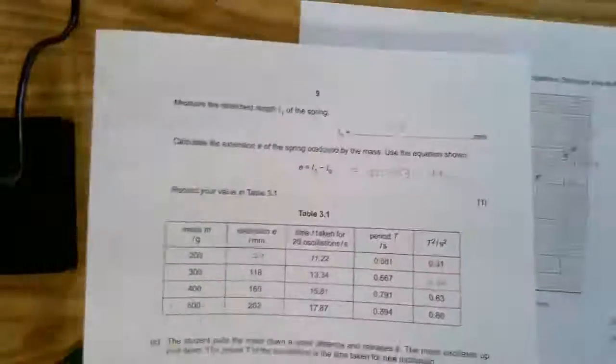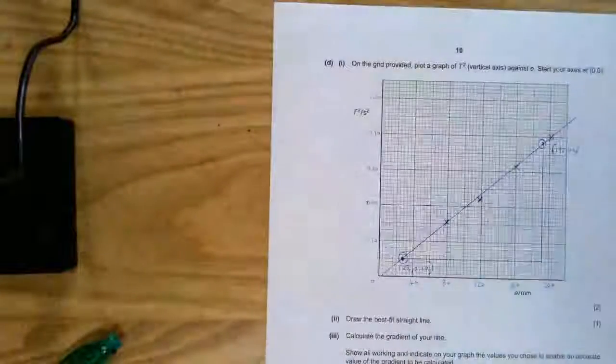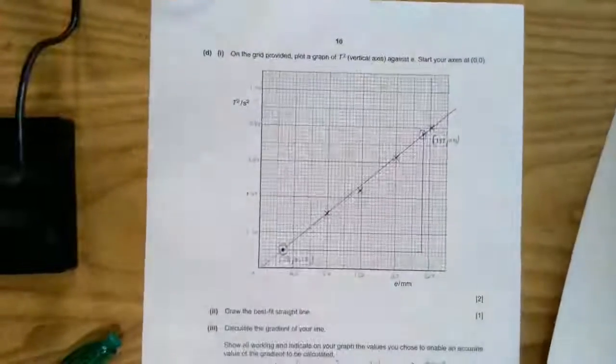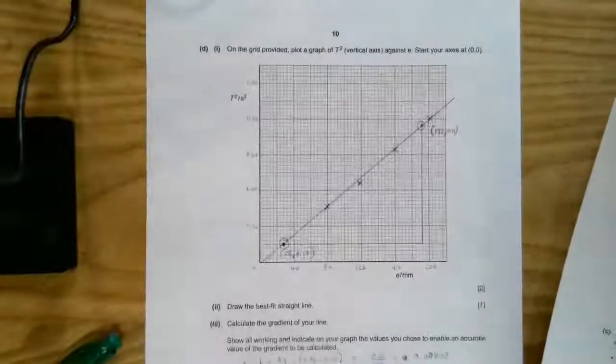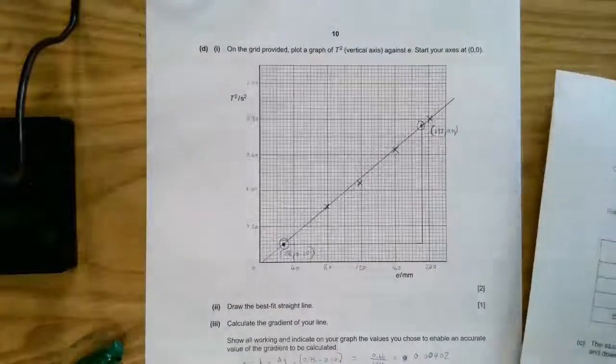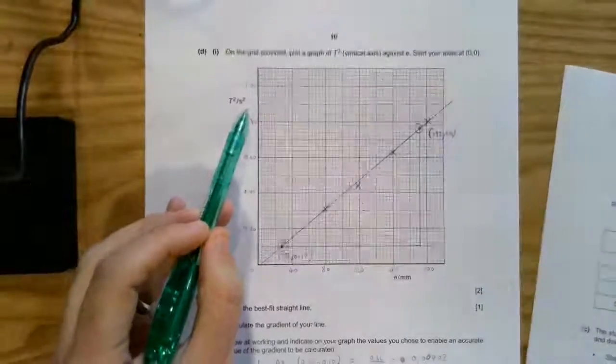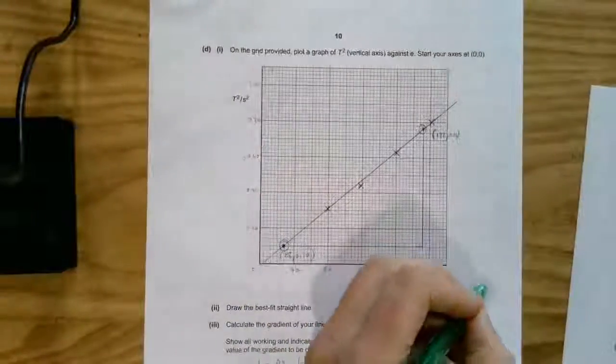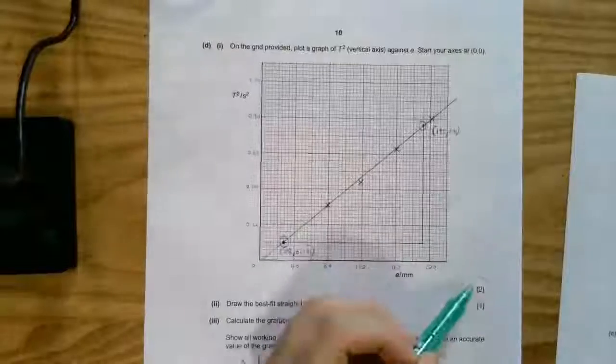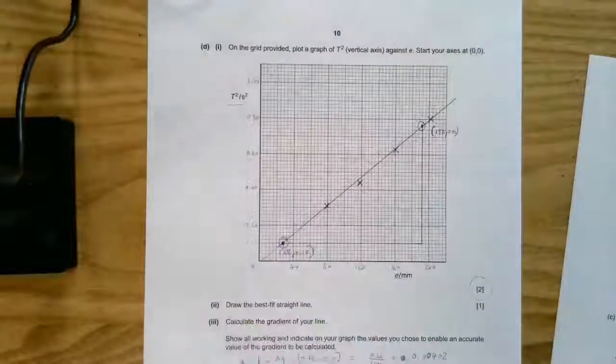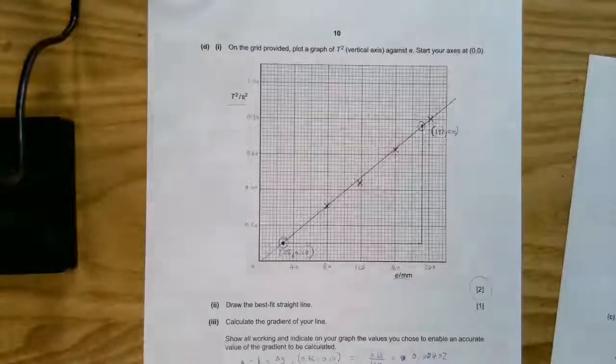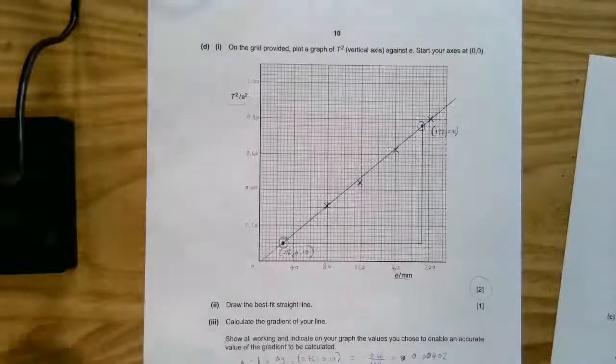Now, once you've got a table, you've got a plot graph. This is my graph. I want to talk you through how I did it with reference to the table, so I'm going to be flipping back and forth between this. Notice first, this is a slightly lower scoring graph than previous ones, because you're only given two marks. Why only two? Because they've told you what should go on each of these axes.